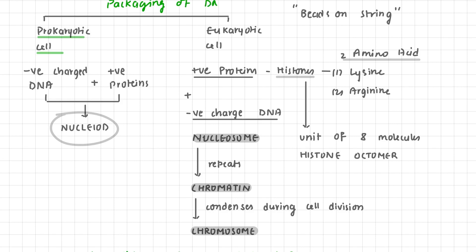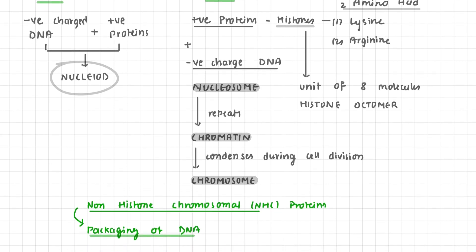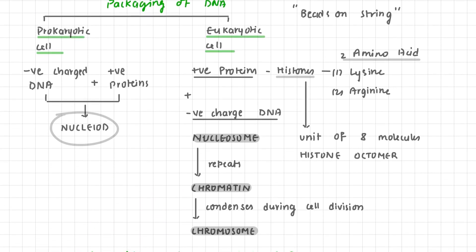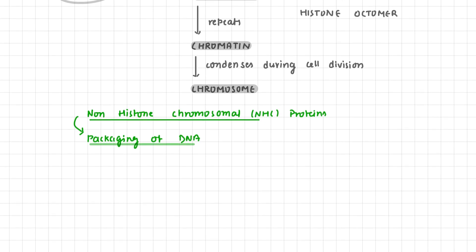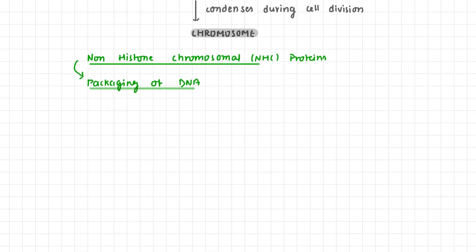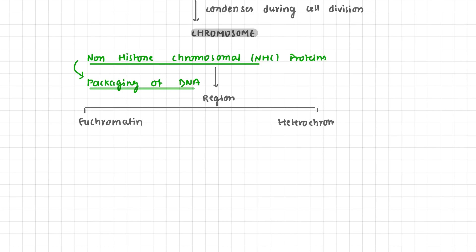In eukaryotic cells, the well-defined nucleus has a more advanced structure. The packaging of DNA can be further condensed due to non-histone chromosomal (NHC) proteins. The regions present in chromatin are of two types: euchromatin and heterochromatin. These non-histone chromosomal proteins are found in these two regions.